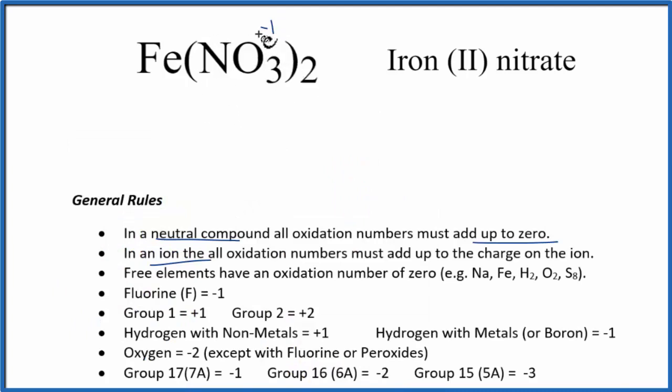So two times minus one, this whole thing's minus two. The iron has to be plus two for this to all add up to zero for it to be a neutral compound.